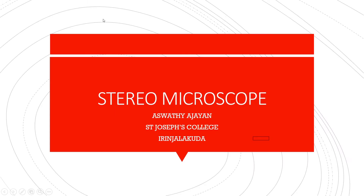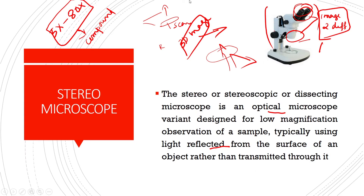Welcome to another session on the dissecting microscope. A stereomicroscope, also called a stereoscopic microscope, is an optical microscope designed for low magnification observation of a specimen.